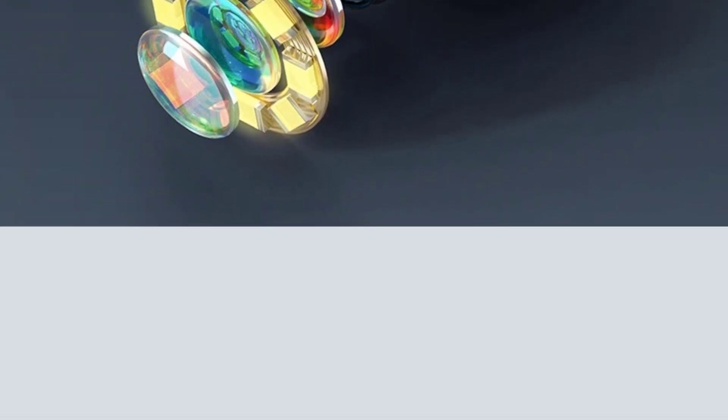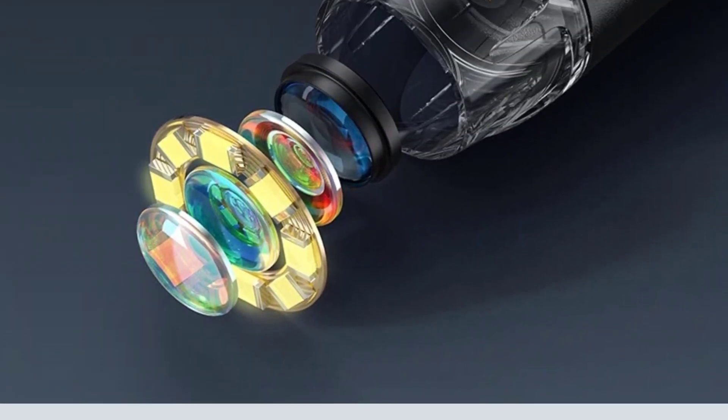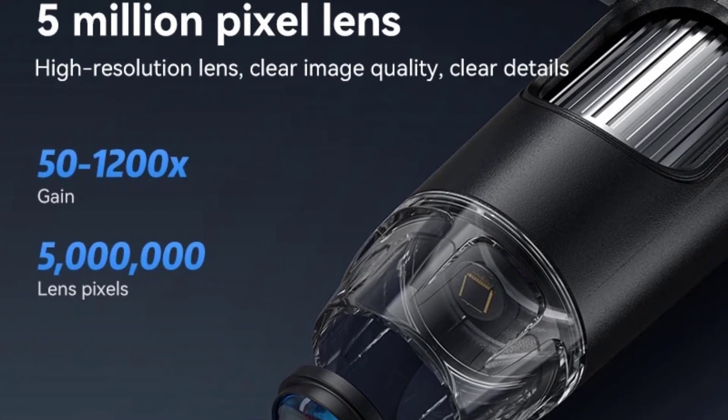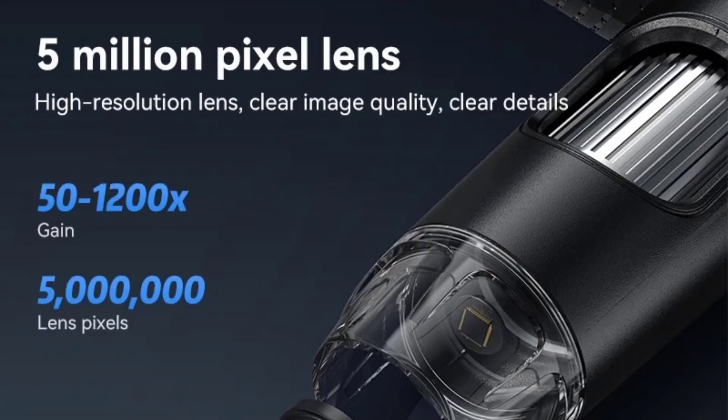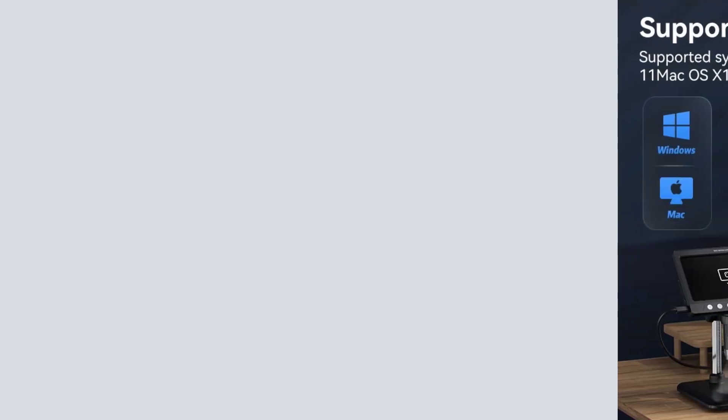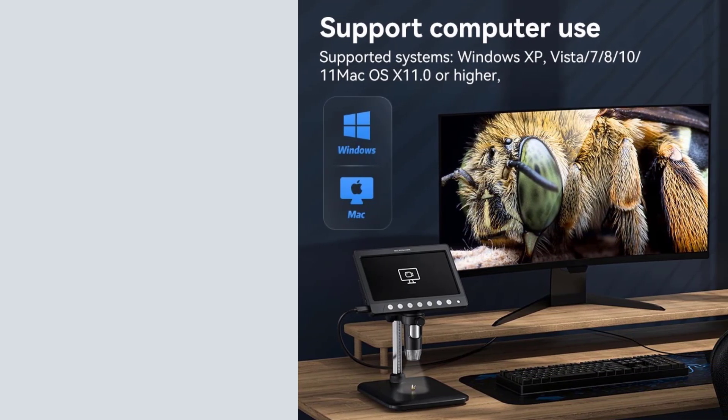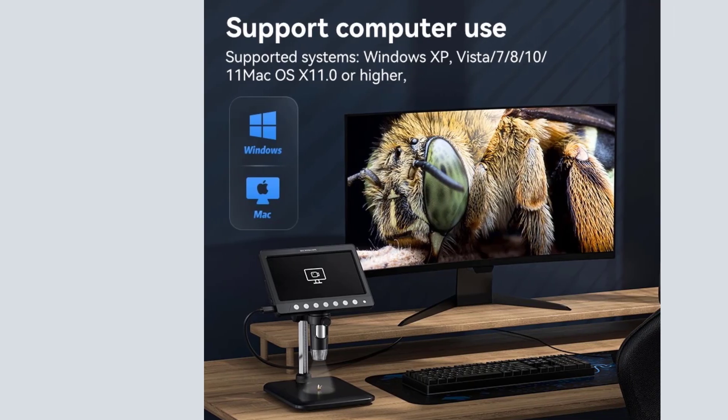2: 50x to 1200x Magnification. Easy to zoom right in and out and focus by adjusting the knob to view the incredible details at a magnification range from 50x to 1200x. Raise or lower a microscope to adjust the distance between the camera and the objective. Larger view with the microscope on the top, and better details at the bottom.